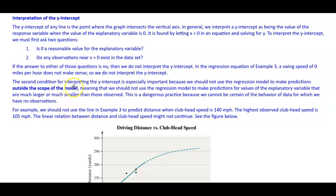The second condition for interpreting the y-intercept is especially important because we should not use the regression model to make predictions outside the scope of the model. Meaning that we should not use the regression model to make predictions for values of the explanatory variable that are much larger or much smaller than those observed. This is a dangerous practice because we cannot be certain of the behavior of the data for which we have no observations.